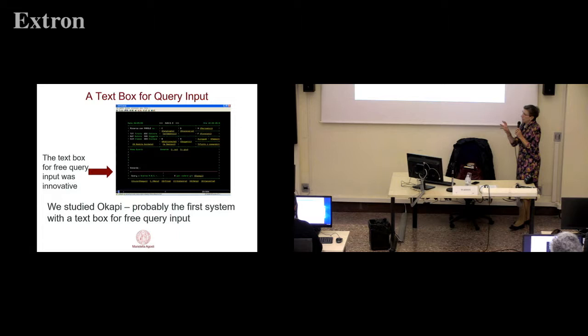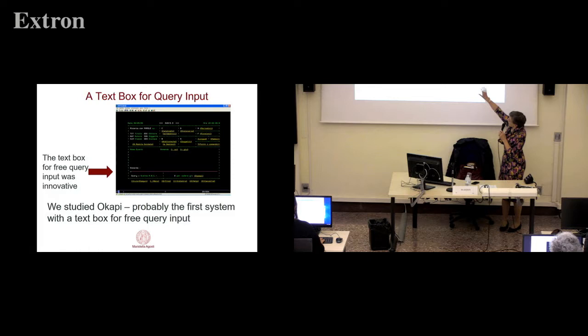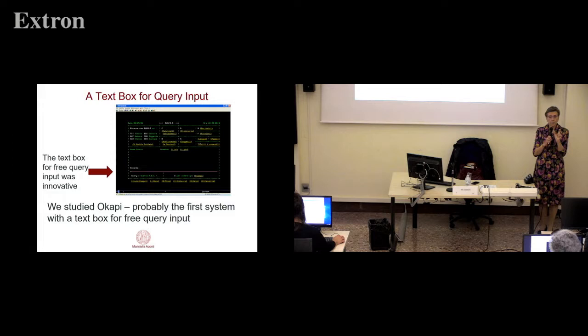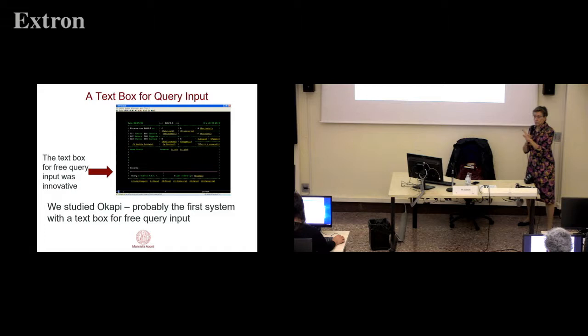What was very interesting in DUO was that we made use of our experience in information retrieval. We made available in 1991 an area — that black area on the screen — where the user can write a query as he or she likes. Until that time in library automation it was necessary to fill in separate fields: write the surname of the author, the name, the title of the book, and so on. To my knowledge it was the first OPAC in Italy with this possibility.